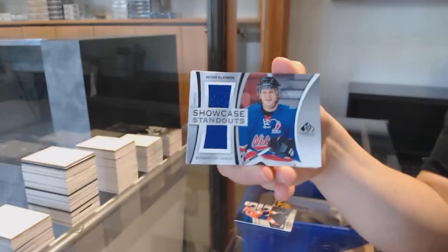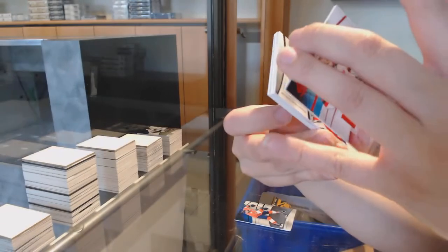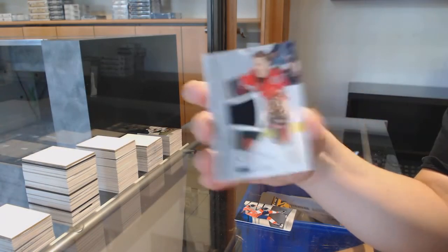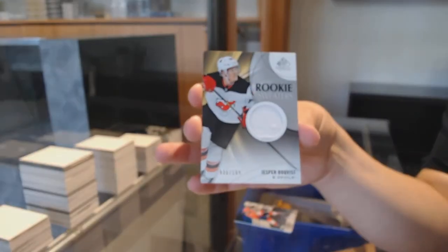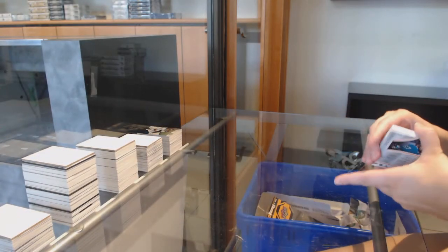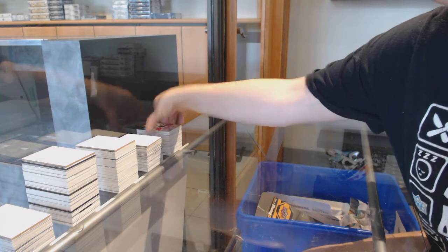Nathan MacKinnon, Showcase Standouts dual jersey for the Colorado Avalanche. Thomas Chabot, all-star jersey for Ottawa. And rookie sweaters jersey number to 199 for the Devils, Jesper Boqvist. There we go, ladies and gentlemen. Thank you.